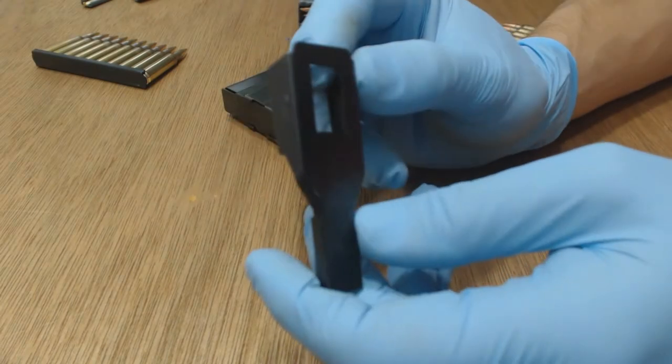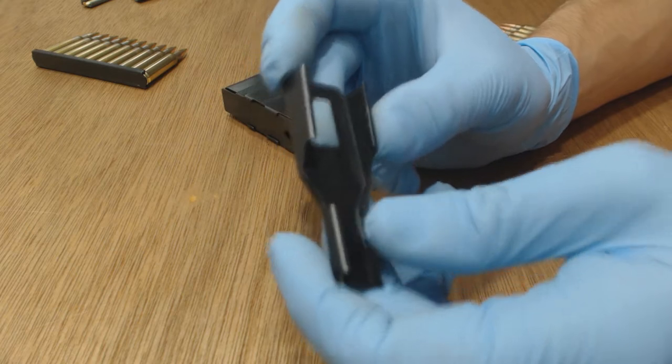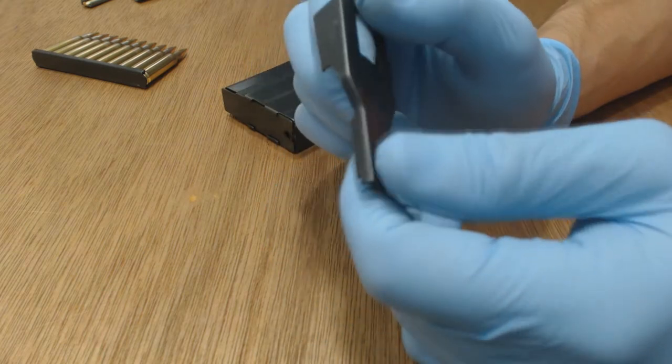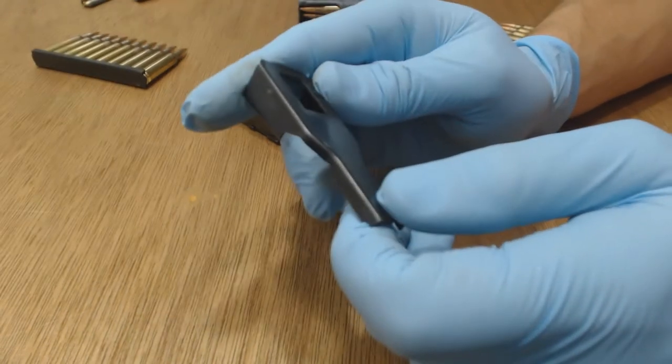Hey everybody, today I want to show you the mini 14 loading spoon that we sell, also known as a filler. These are factory made ones by Ruger and they're made of blue steel, pretty strong and durable, so they probably last a while.